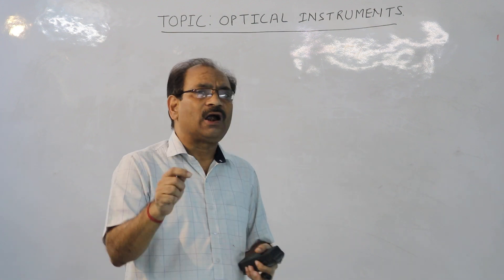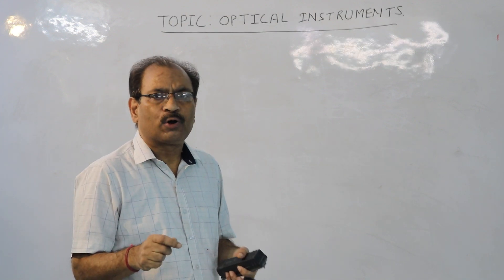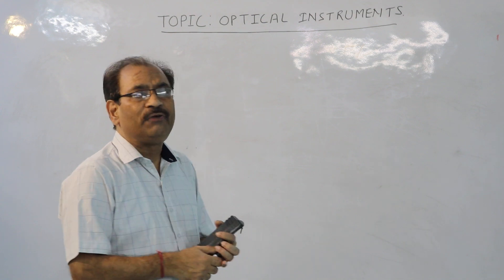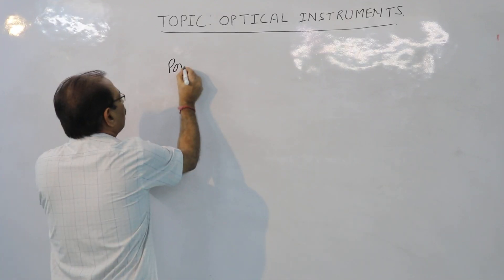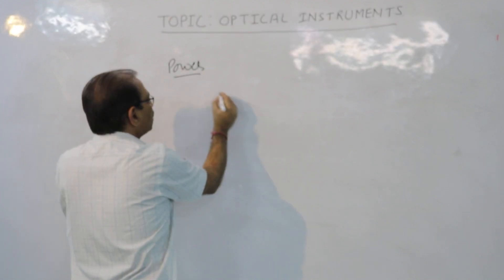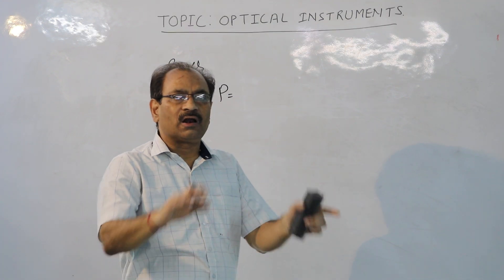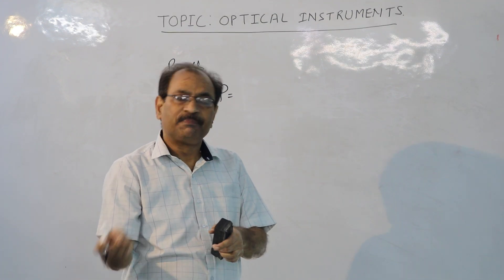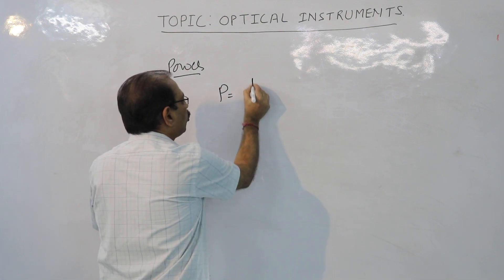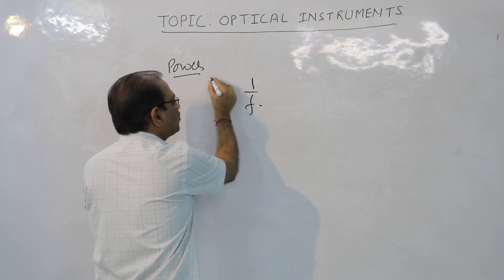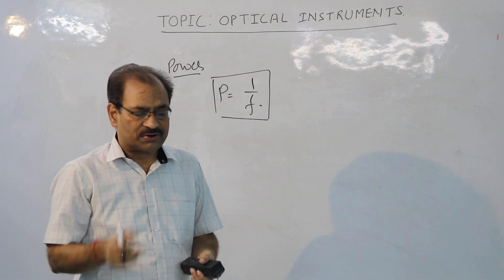I will start today's lecture with an important concept called the power of a lens. The power of a lens is defined as the reciprocal of focal length — reciprocal means 1 upon focal length. So P is equal to 1 upon F, where F stands for the focal length of the lens, whether it is a convex lens or a concave lens.